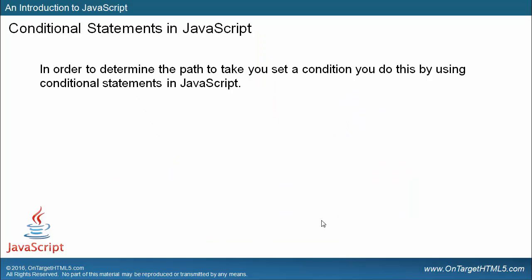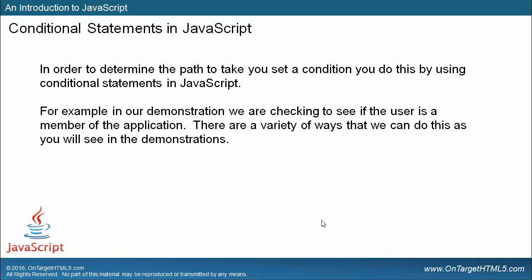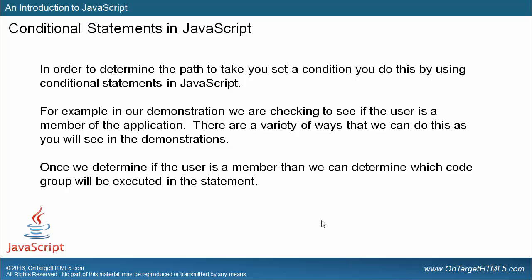In order to determine the path to take, you set a condition. You do this by using conditional statements in JavaScript. For example, in our demonstration, we're checking to see if a user is a member of the application. There are a variety of ways we can do this. Once we determine if the user is a member, we can determine which code group will be executed based on that condition.